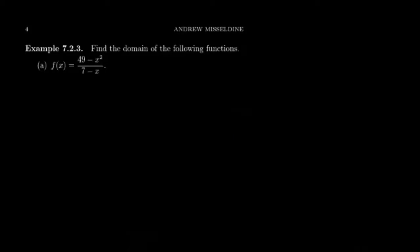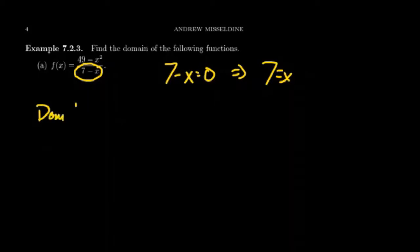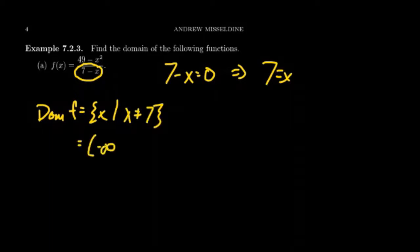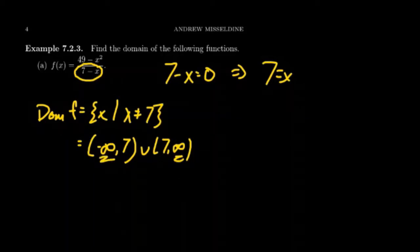We have a rational function f(x) = (49 − x²) / (7 − x). There are no square roots, no logarithms, but there is division, so we need to see what makes the denominator go to zero. Solving 7 − x = 0, we add x to both sides and get x = 7. So the domain of f is all real numbers x such that x does not equal 7. In interval notation, this is negative infinity to 7, union 7 to infinity. We never put a bracket next to infinity or negative infinity, and we don't include 7 since it's the exception.